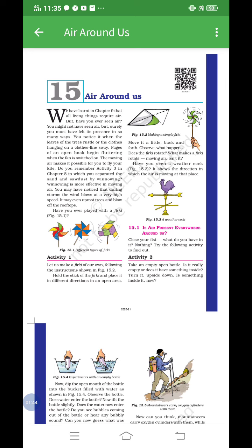Do you remember activity 3 in chapter 5, in which you separated sand and sawdust by winnowing? What is the meaning of winnowing? Winnowing is a method of separation. It is the process of removing lighter particles from heavier particles by wind or blowing, and this is known as winnowing. So winnowing means separation — first of all, it is a separation.